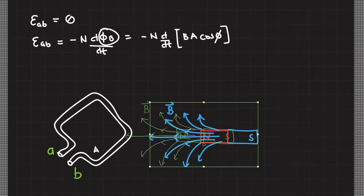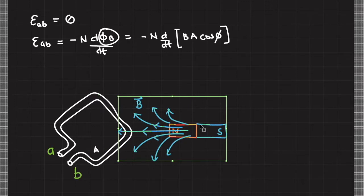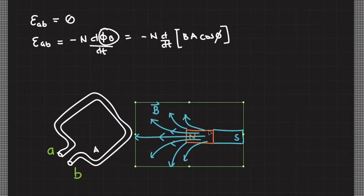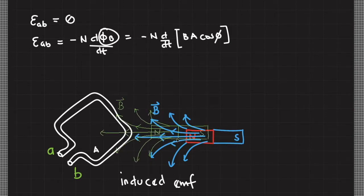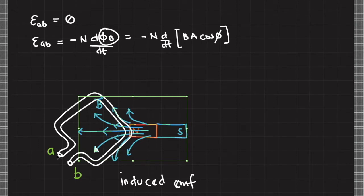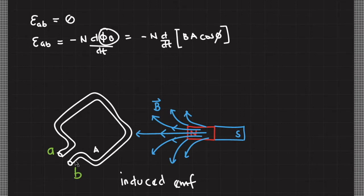However, when I move this permanent magnet towards this conducting loop, during that motion there is a buildup of potential difference and there will be a measurable induced EMF between points A and B. Similarly, when I move the magnet away from the loop, there is also an induced EMF. But when I stop moving the permanent magnet, the EMF between points A and B drops back to zero.